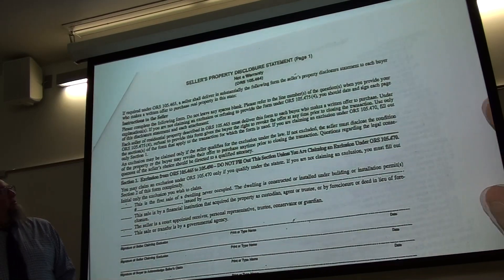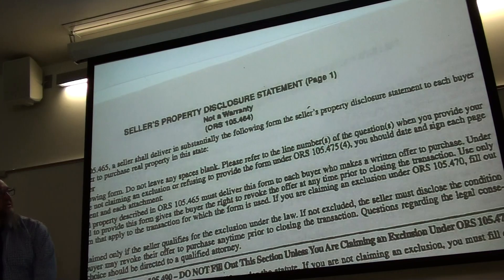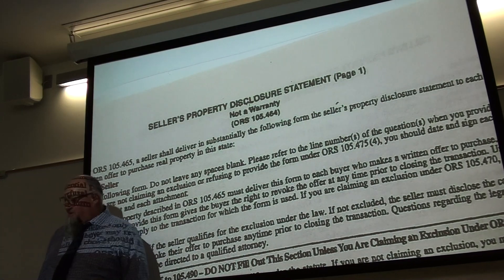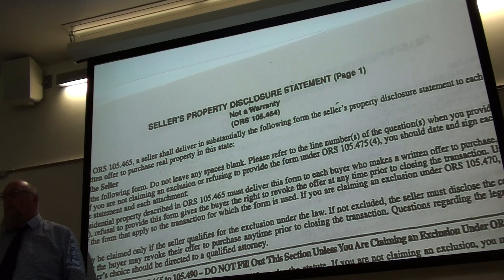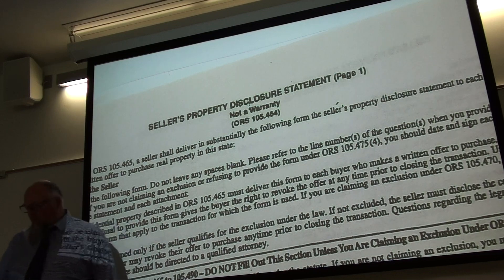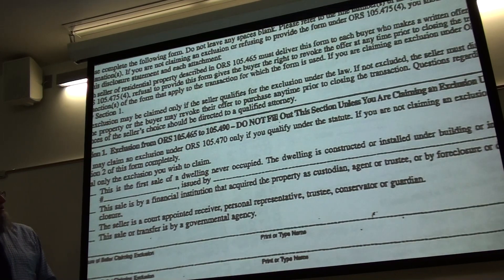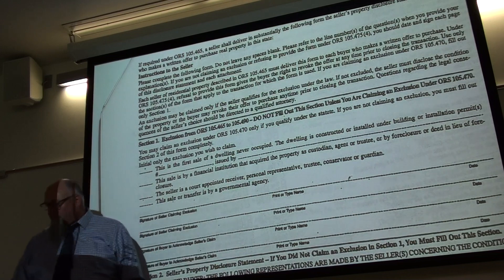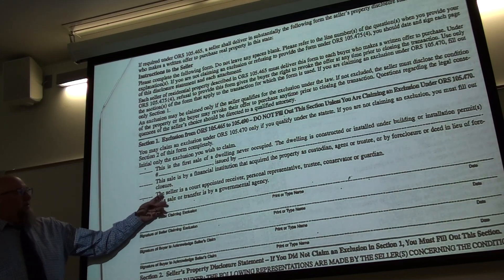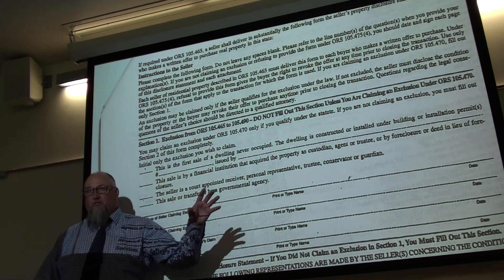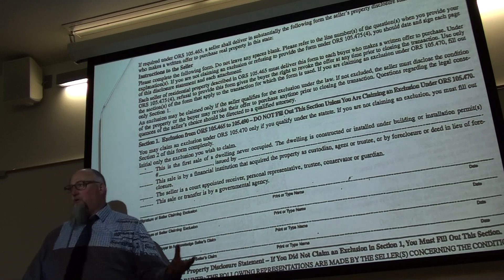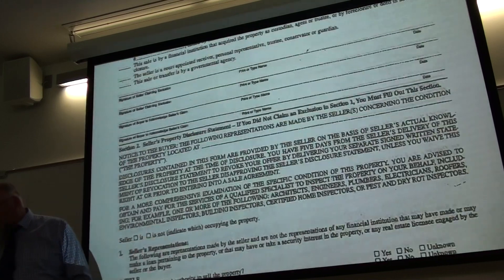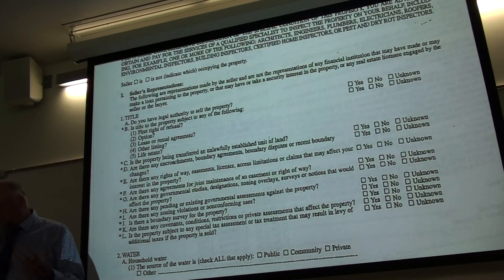This next form is mandatory under Oregon law — the seller's property disclosure statement. If you're selling residential property, with a few exceptions, you must provide this form to the buyer. Exceptions include brand new homes, sales by financial institutions in foreclosure, court-appointed situations such as an estate where you don't know the condition as the owner did, and sales by governmental entities.